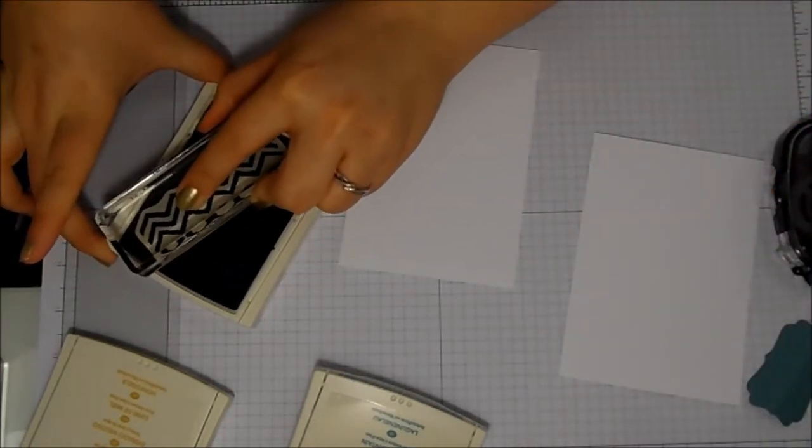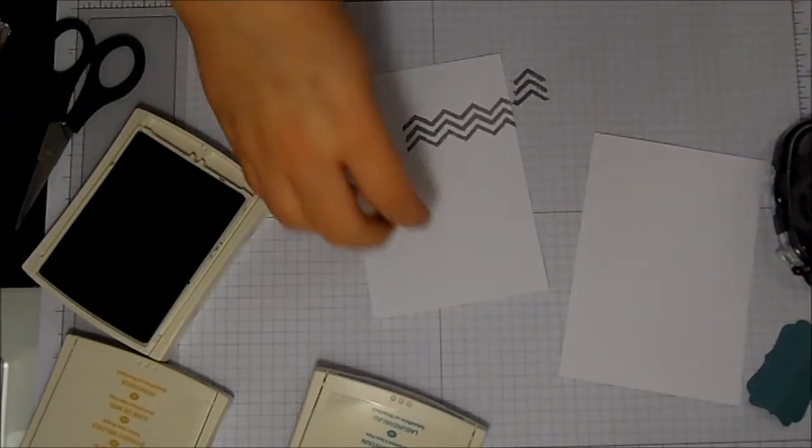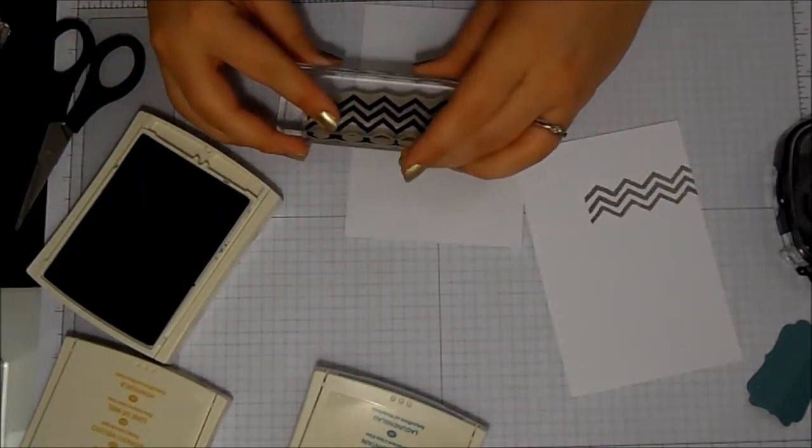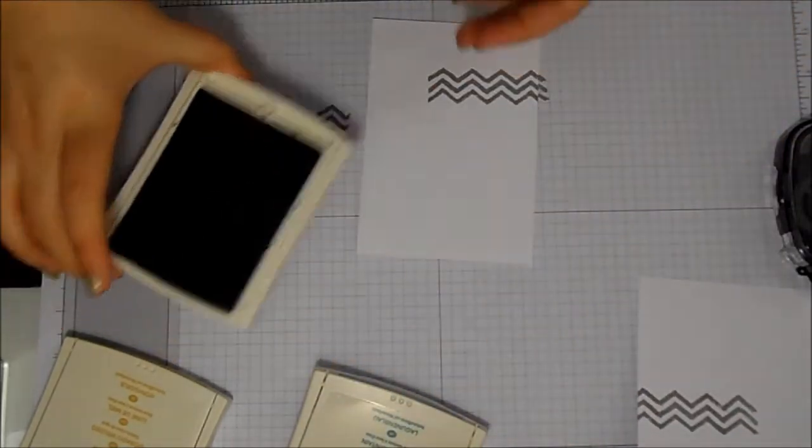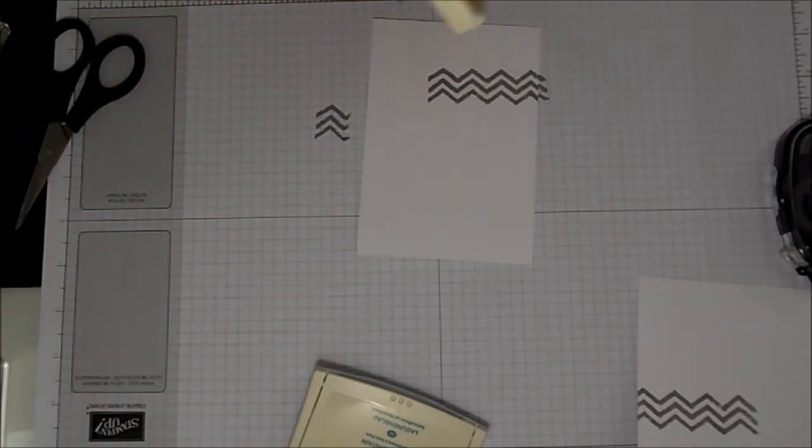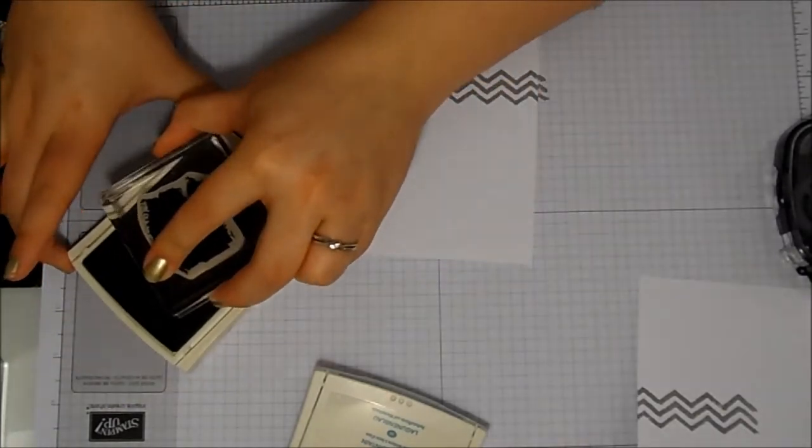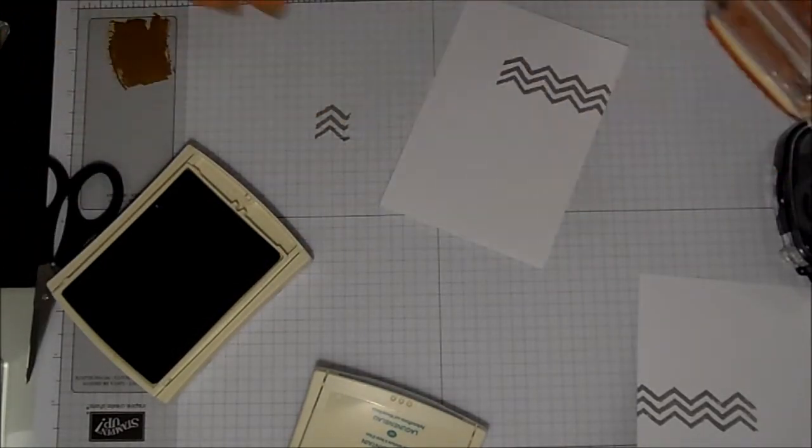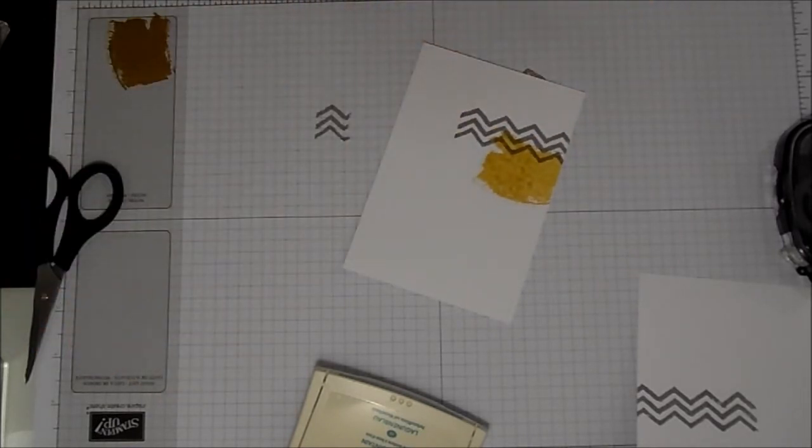So I've got Smoky Slate, Lost Lagoon, and Hello Honey inks as well. So I'll do the front piece first—actually, I want to do them both together. You take the zigzag stamp from that Work of Art into the Smoky Slate and just down at the bottom for the front piece and across the middle for the inside piece. I'll pop that inside piece over to one side, and then I'm going to take Hello Honey and this stamp from Work of Art, which is like a swooshy stamp—I love it—and I'm going to stamp off and then I'm going to stamp it just there, I think. And that's all the Hello Honey.